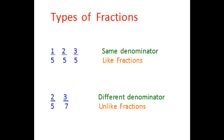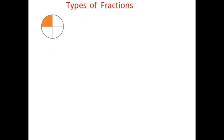Fractions where the denominator is the same are called like fractions, and where the denominator is not the same, those are unlike fractions. Now there are some more types. Let's look at this picture — a circle, let's call it a pizza. A quarter of the pizza is highlighted here, so we can represent that as 1 over 4.